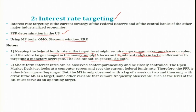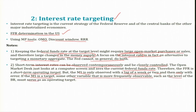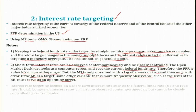Short-term interest rates can be observed contemporaneously and be closely controlled by the Fed — the open market desk simply looks at the computer screen and sees the current Fed fund rate. In contrast, if money supply is targeted, it is only observed with a lag of a week or two, and only with some error. The Fed fund rate is therefore a short-term operating target. Because of this lag in observing money supply, short-term interest rate targeting is a more feasible intermediate target for the central bank.